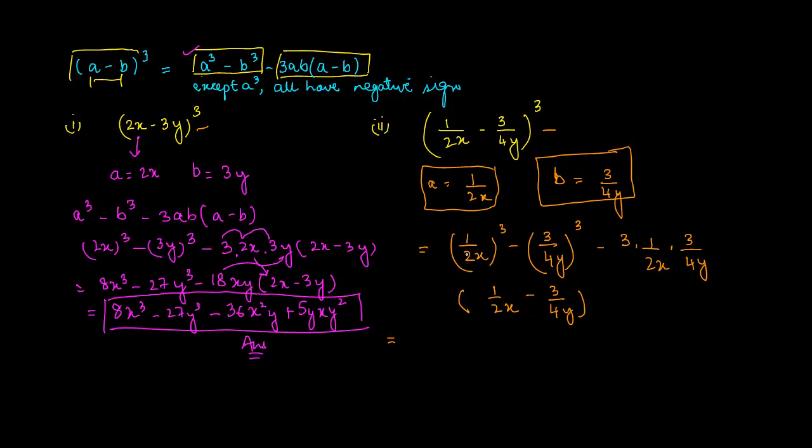Now doing the cube of these things, we know that a upon b whole cube is equal to a cube upon b cube. So this will be 1 cube which is 1 upon 2x cube which will be 8x cube. Minus, similarly here, 3 cube is 27, 4y cube will be 64y cube. Minus 3 into 1 is 3 into 3 is 9 upon 8xy into 1 upon 2x minus 3 upon 4y. So this will be... If you take the LCM of these two you will get 8xy.